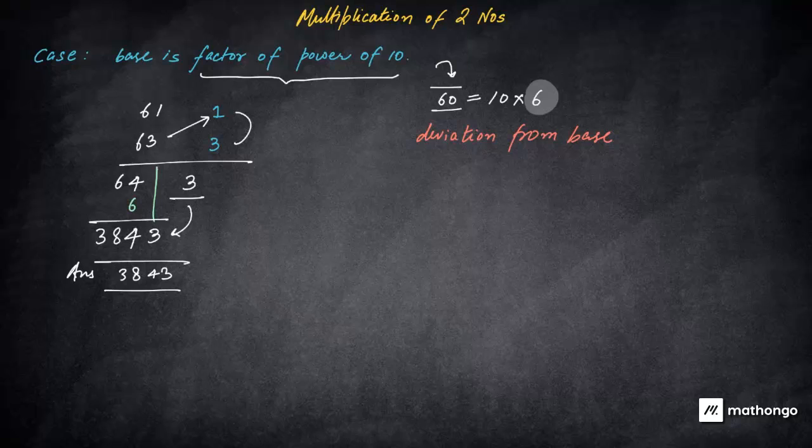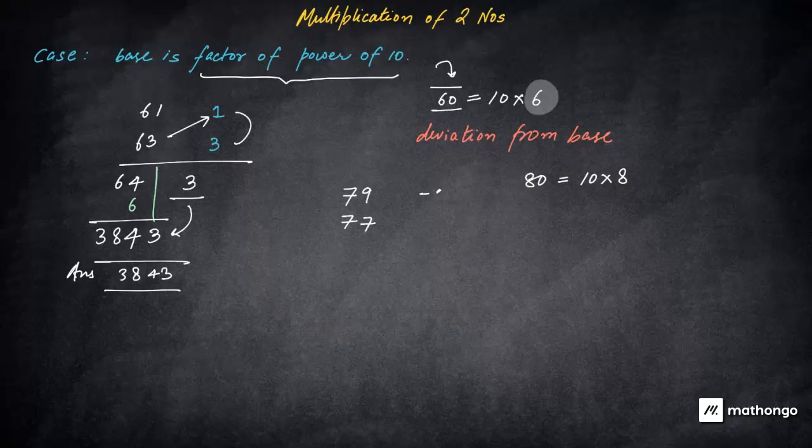Let's take another question to understand this stuff. So let's say I take 79 into 77. Now what should be the base? It looks like you will take the base 80 because both the numbers are closer to 80. So this will be 10 into 8. This is deficit of 80 by 1, and this is deficit of 80 by 3.